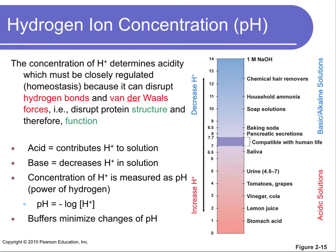We'll end with pH, which tells us the power of hydrogen. The greater the amount of hydrogen ions, the more acidic the solution and the lower the pH number. As hydrogen ion concentration decreases, the pH number goes up and you become more alkaline or basic. Seven is neutral. Stomach acid has a pH of around two — a very acidic environment — while household ammonia is more alkaline. Buffers are important in the body because they help minimize changes to pH. The most important buffer in our body is the bicarbonate ion, which we'll learn about as we progress through the term.